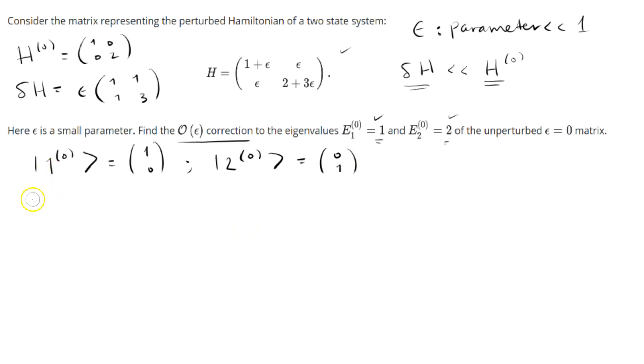Let's calculate these energy corrections. E1^(1) is going to be equal to ⟨1|δH|1⟩, which is nothing more than ⟨1, 0|δH|1, 0⟩. Let's compute it. The bra ⟨1, 0| is just the complex conjugate transpose. Since this is obviously real, it's just (1, 0) as a row vector. Our perturbed Hamiltonian is epsilon times (1, 1; 1, 3), and then |1, 0⟩ is the column vector (1; 0).